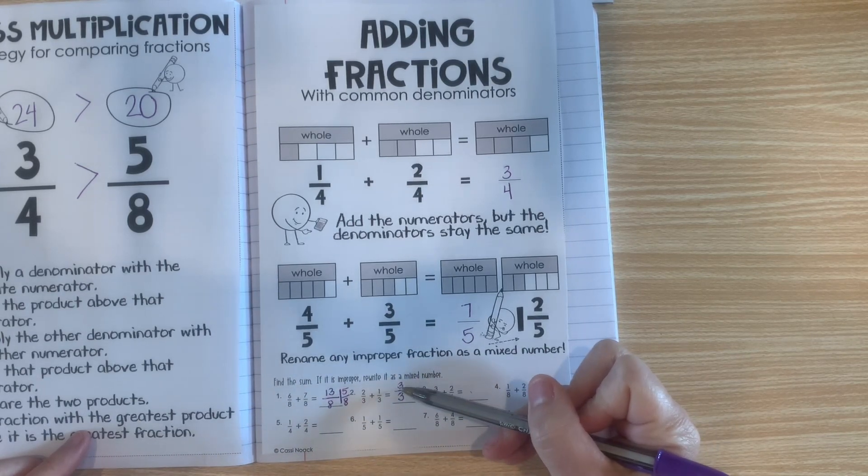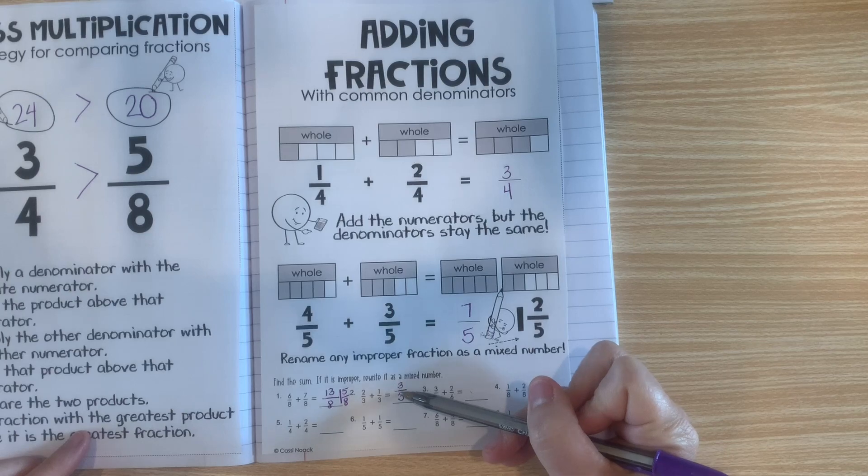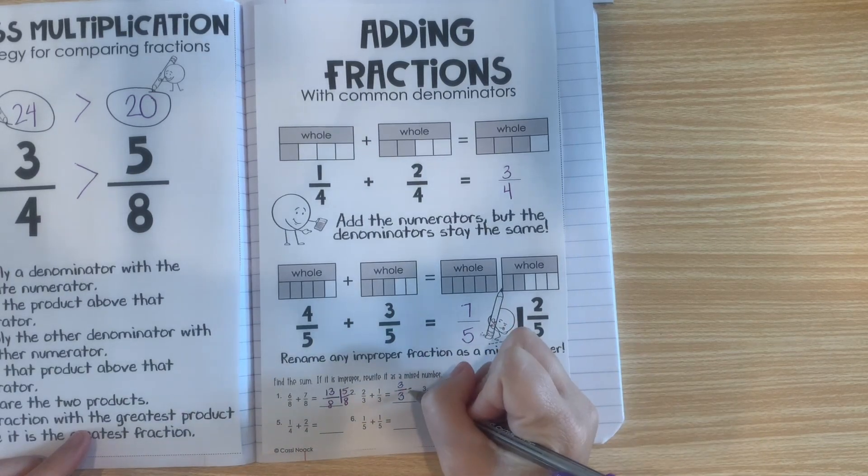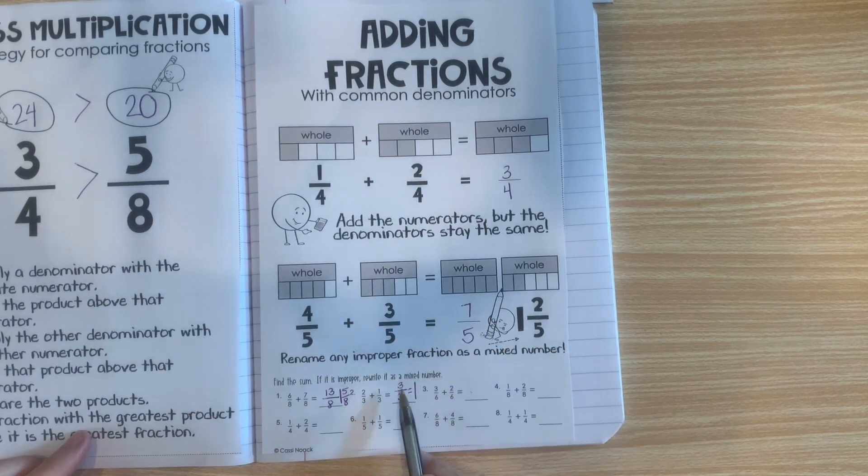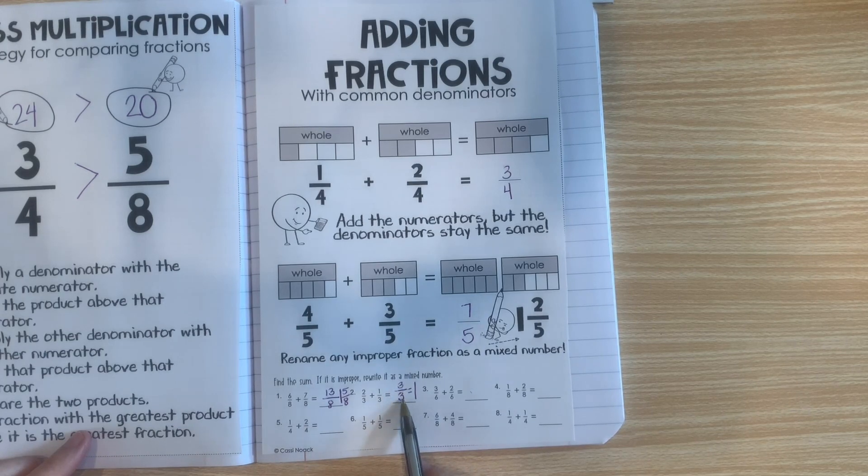Anytime you see a fraction that has the same numerator and denominator, it equals one whole. And that's because 3 out of 3 are shaded.